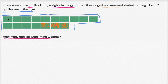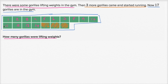So counting the ones lifting weights: 1, 2, 3, 4, 5, 6, 7, 8, 9, 10, 11, 12, 13, 14. So 14 gorillas were lifting weights — those are the ones where the numbers are written in a purplish color. Then three more came in and started running, and now there are 17. You can see the 17 blocks. So how many gorillas were lifting weights to begin with? That's 14.